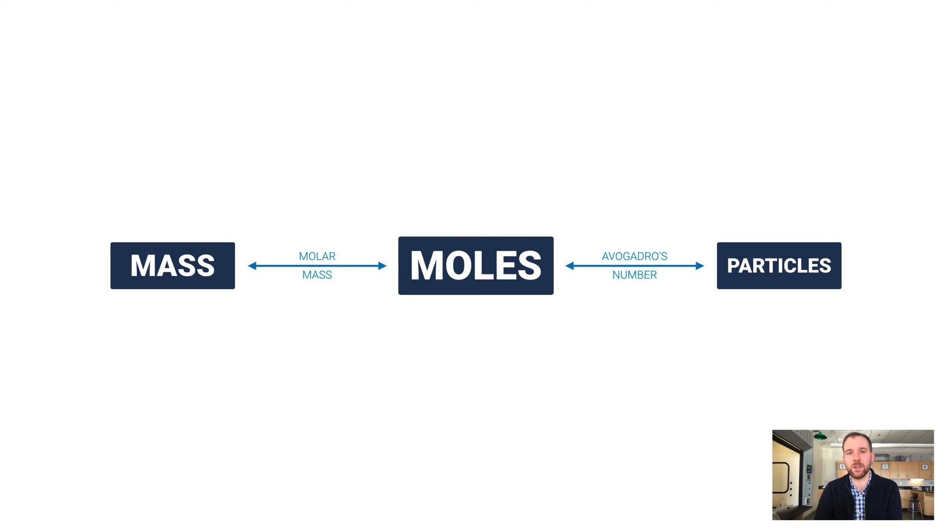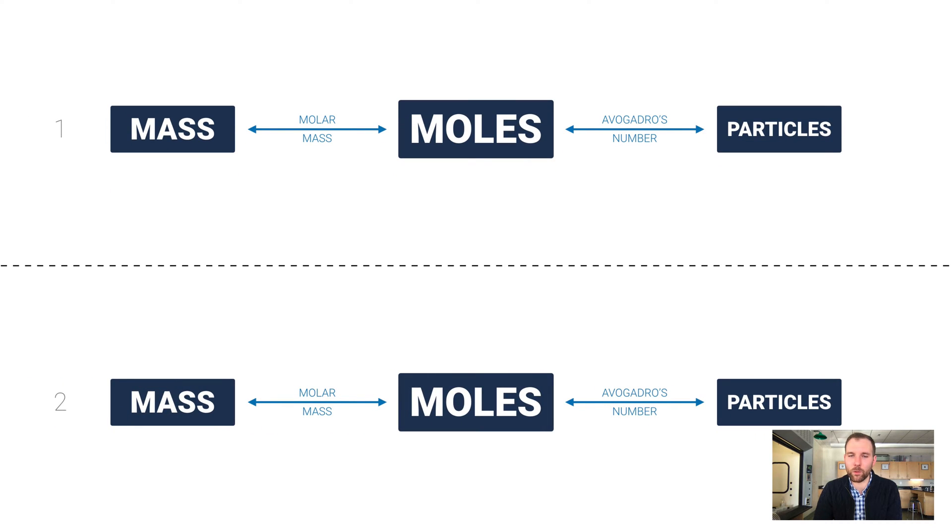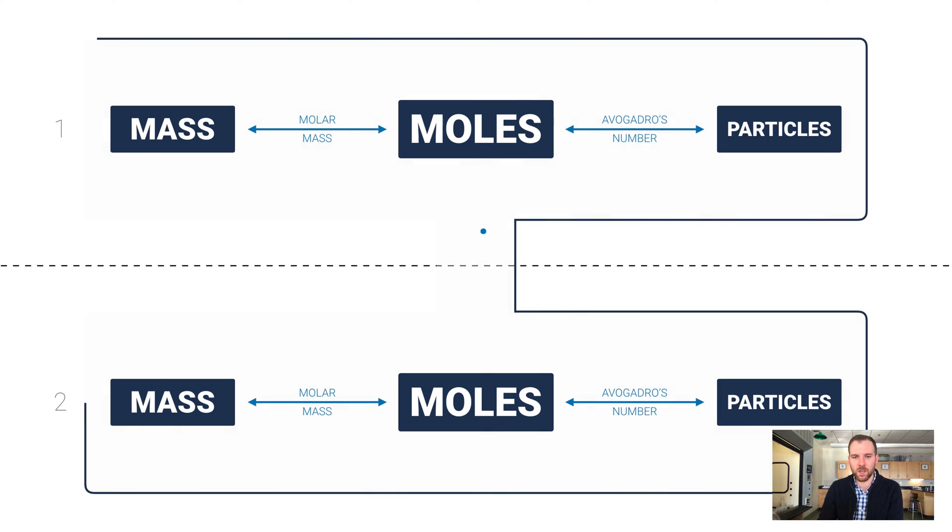This relationship between mass, moles, and particles is crucial to chemistry and other branches of science. Now we're talking about one substance here. If I wanted to relate two substances, maybe in a chemical reaction, I've got substance one set up here and substance two with an identical setup. My only connection between these two substances is through the moles, and that part is going to be the molar ratio.